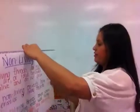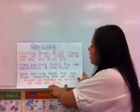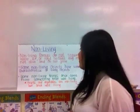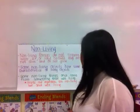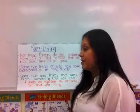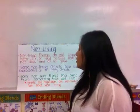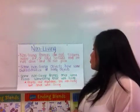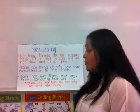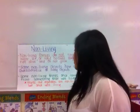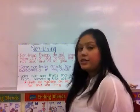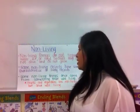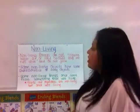Now let's talk about non-living. Non-living things do not require water, air, or food because they are not alive and do not grow. Some non-living objects have some characteristics of living objects, but that doesn't mean they're living because they do not possess the four rules. And some non-living things once came from something that was living — for example, fruits and vegetables were once living because they came from a tree or underground, but once pulled off from the tree, they stopped growing, so they're considered non-living now.